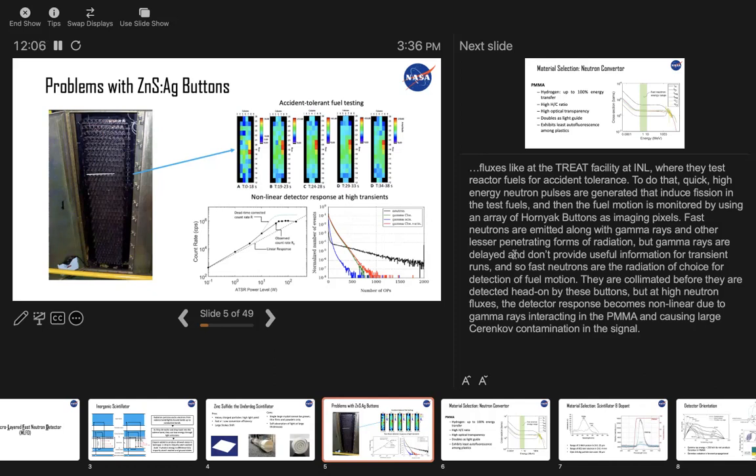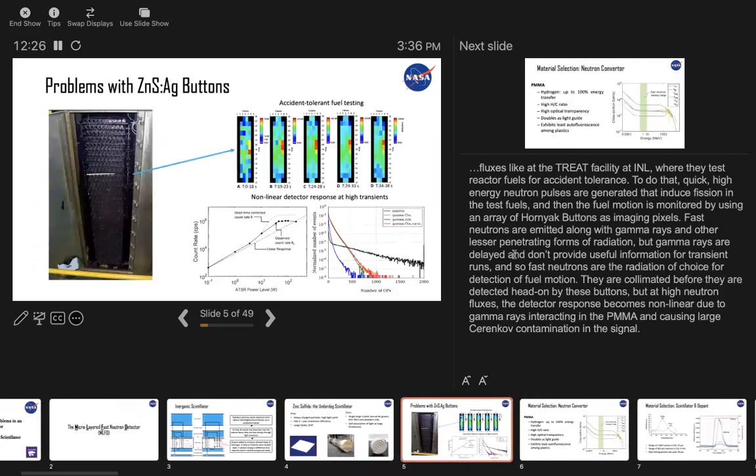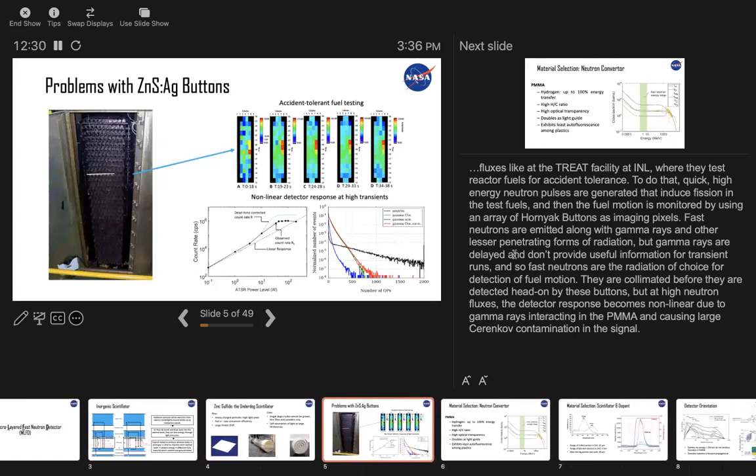But in very high flux environments of gamma rays and neutrons, they still suffered from signal contamination of gamma rays interacting in the PMMA and producing Cherenkov light. Especially in very high fluxes, fluxes such as those present at facilities like the TREAT facility at Idaho National Lab. At the TREAT facility, which was also built in around 1950, it was a facility for testing nuclear reactor fuels for accident tolerant testings. They shut this down around 1980, but after Fukushima happened in 2011, they restarted accident testing of nuclear fuels.